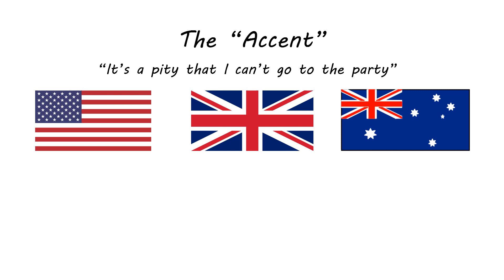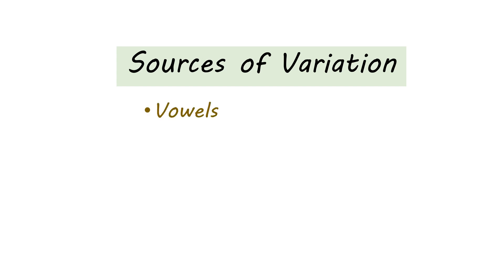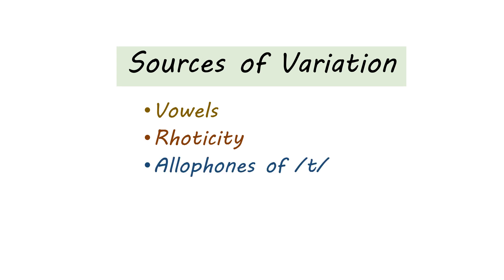We're going to talk about four things that are commonly pronounced differently in different dialects of English. Those four most common sources of variation are the vowel system, rhoticity, allophones of T, and dental fricatives. These are four aspects that tend to differ quite commonly across different varieties of English, and we will talk about how to think about these different aspects.